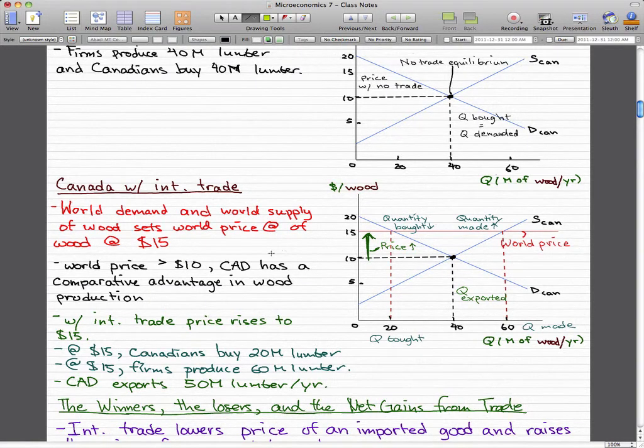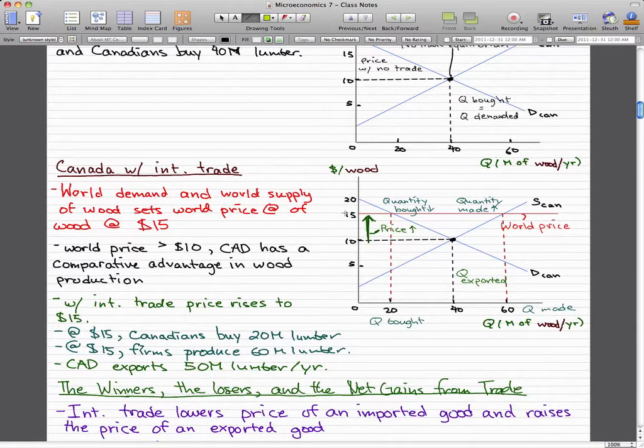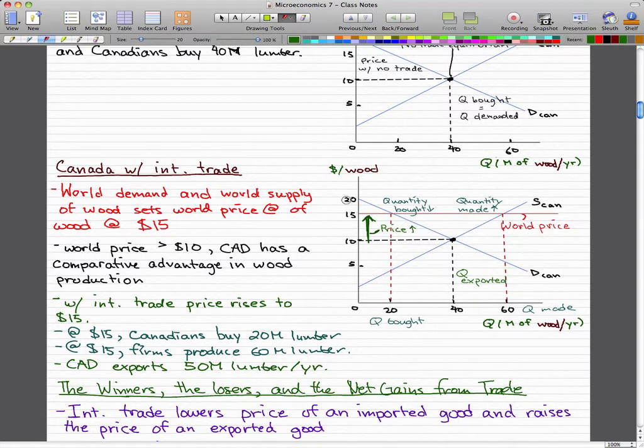So Canada actually exports 40 million pieces of wood.